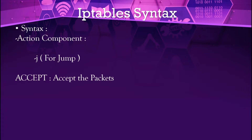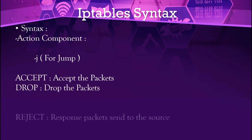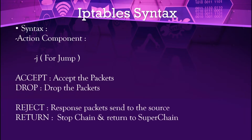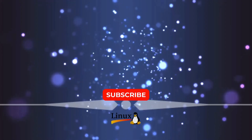The last component is the action: after a chain match, what do we do with that packet? The action uses -j, which means jump. Then we specify: ACCEPT, DROP, REJECT, or RETURN. If we accept the package it will allow it to reach our server. If we drop the package it will discard it. Reject and return options are also available as shown on the screen. Now let's go to our machine to see this practically.